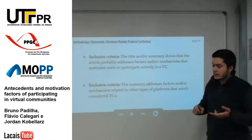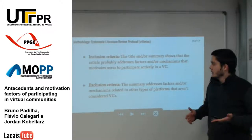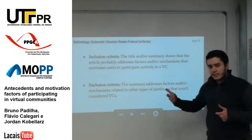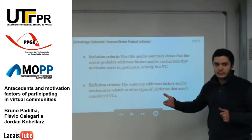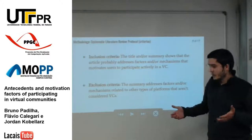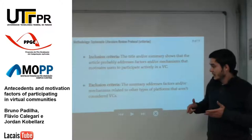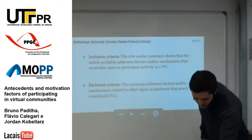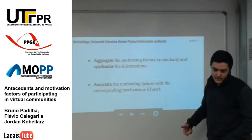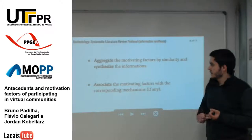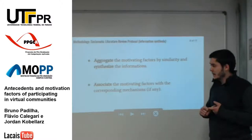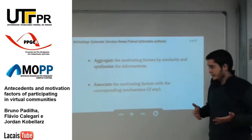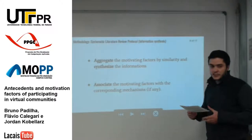We also have two criteria: inclusion and exclusion criteria. The inclusion criterion is that the title, subject, or summary of an article shows that it probably addresses factors and mechanisms that motivate users to actively participate in virtual communities. The exclusion criterion is that the article addresses factors and mechanisms related to other types of platforms that are not virtual communities. Finally, we have two data extraction steps: first, to aggregate motivating factors of a similar area, and then to specify the information, and finally to associate motivating factors with their corresponding mechanisms, if any — not all factors have a corresponding mechanism.